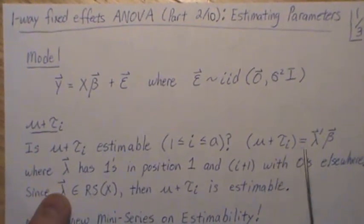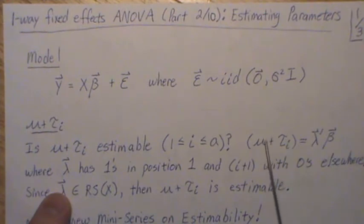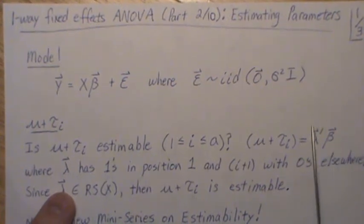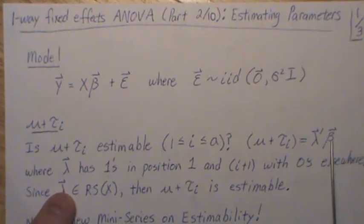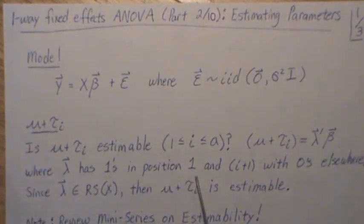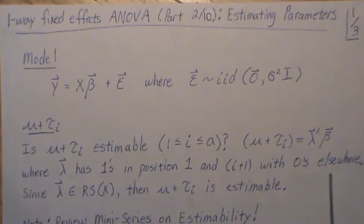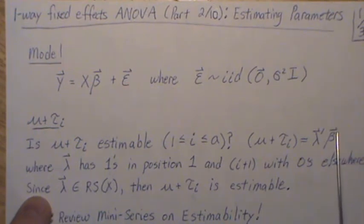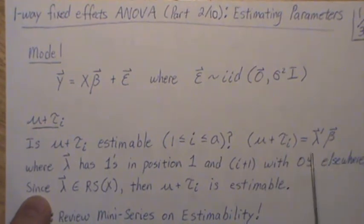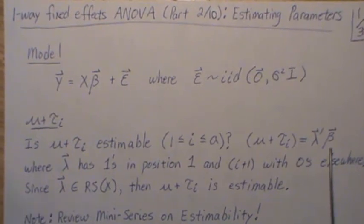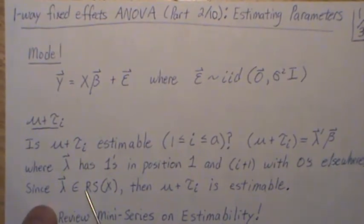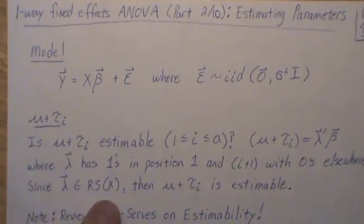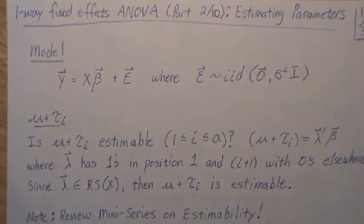The way we define it is first of all, it has to be a linear combination of the betas. So μ + τᵢ has to be represented like this, where this is a vector and the β is a vector. And it can be. So λ has ones in positions one and i+1 and zeros elsewhere. And since λ is in the row space of the design matrix X, then μ + τᵢ is estimable.